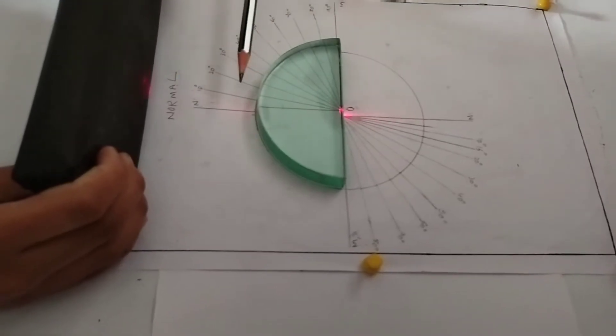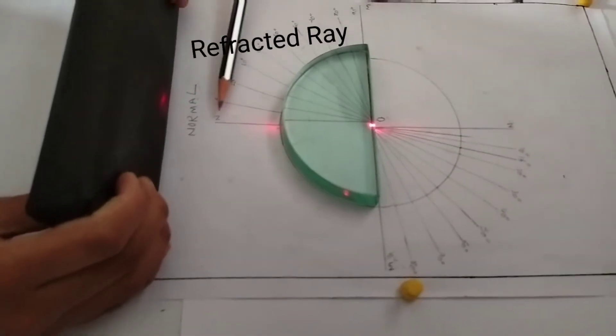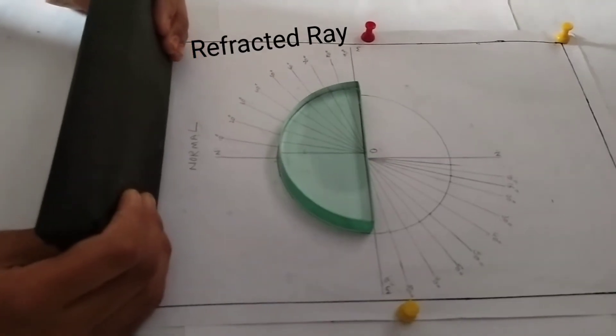Observe the path of laser light coming from the other side of the disk. There is no deviation.